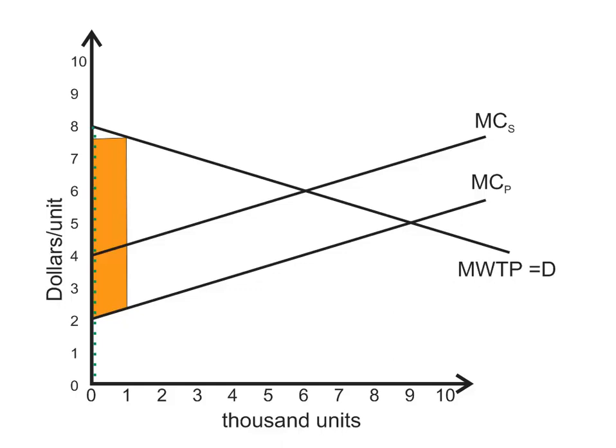Would the public, the sufferers of the externality, be willing to accept that? Well, their increase in damages is only that small red area now, the $1,000 or $2,000 that they would suffer in damages.